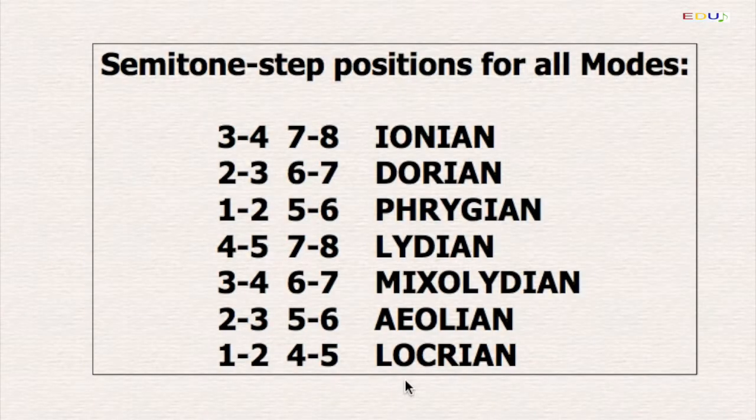So here we find the semitone step positions for all modes summed up. For Ionian, we find the semitone steps between 3 and 4 and 7 and 8. The other steps are whole tone steps. For Dorian, we find the semitone steps between 2 and 3 and 6 and 7.